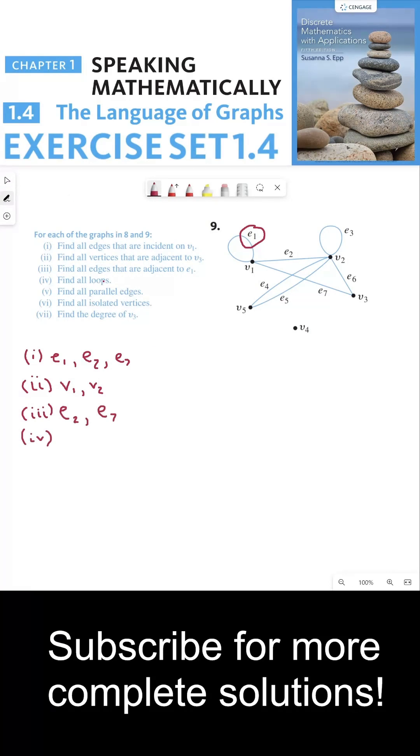For part 4, we have to find all the loops. These are edges that connect vertices to themselves. That's E1 and E3.